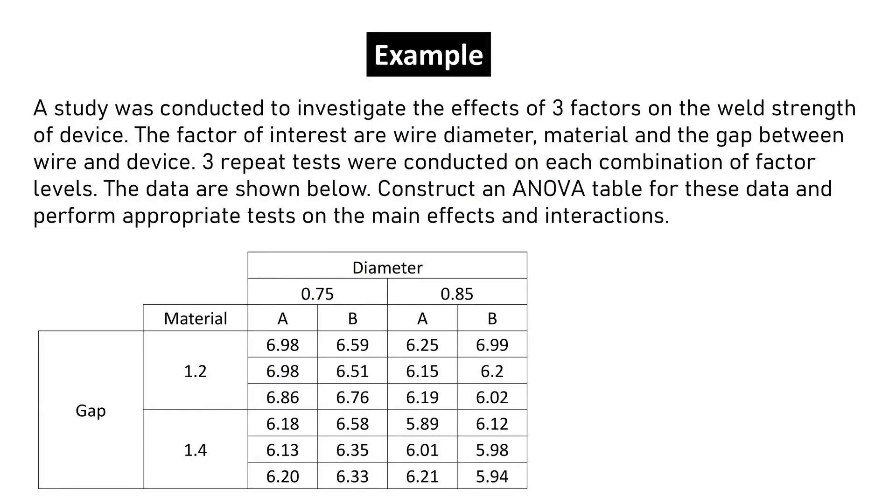A study was conducted to investigate the effects of three factors on the weld strength of a device. The factors of interest are wire diameter, material, and the gap between wire and device. Three repeat tests were conducted on each combination of factor levels. Construct an ANOVA table for these data and perform appropriate tests on the main effects and interactions.